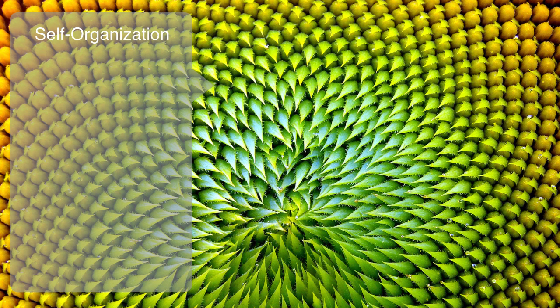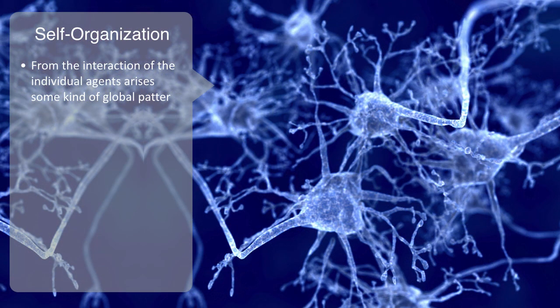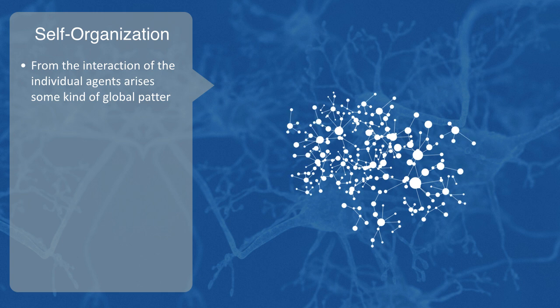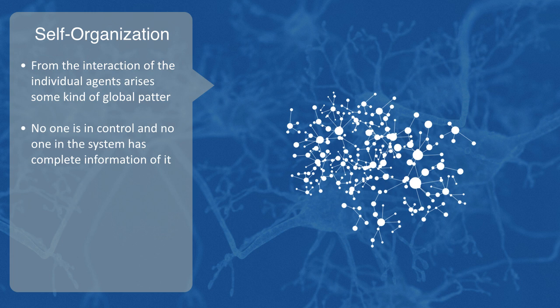This process previously described is a form of what is called self-organization. From the interaction of the individual agents arises some kind of global pattern which typically could not have been predicted from the behavior of the agents in isolation. For example, in the brain, consciousness is an emergent phenomenon which comes from the interaction between the brain cells; thus, the global property of consciousness results from the aggregate behavior of individual elements. Within this macro scale system that emerges, control and regulation is typically distributed out. There is no master neuron or set of neurons that tell the whole brain what to do — no one is in control, and no one in the system has complete information of it.